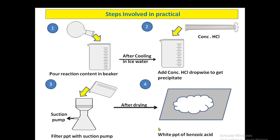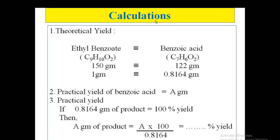Let's see the calculations. For theoretical yield, we use ethyl benzoate and benzoic acid with their corresponding molecular formulas. From that we can find out the molecular weight — ethyl benzoate has a molecular weight of 150 g/mol and benzoic acid has 122 g/mol. From that, we can calculate the theoretical yield: if you take 1 gram of ethyl benzoate, it will give you 0.8164 gram of benzoic acid.